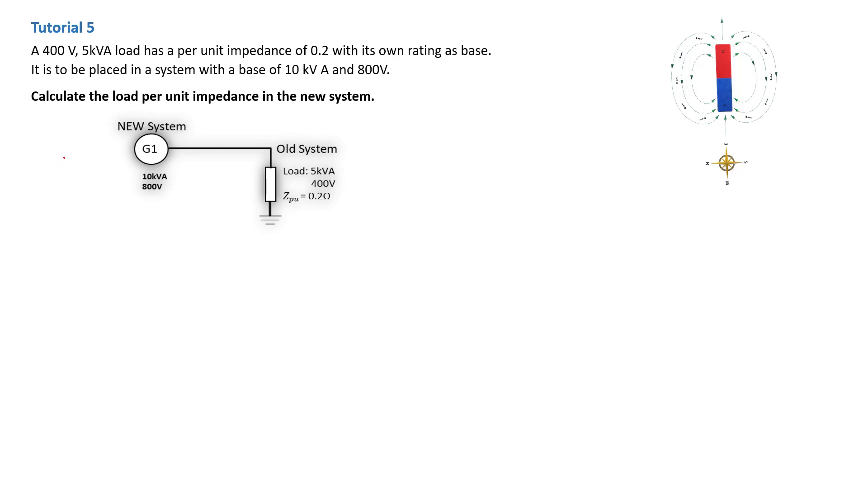The problem statement says we have a 400 volt, 5 kVA load that has a per unit impedance of 0.2 with its own rating as base. So that will be the 5 kVA rating as the base for this whole system.